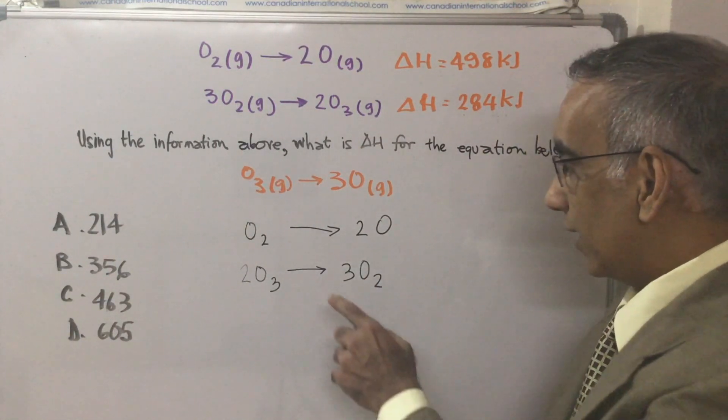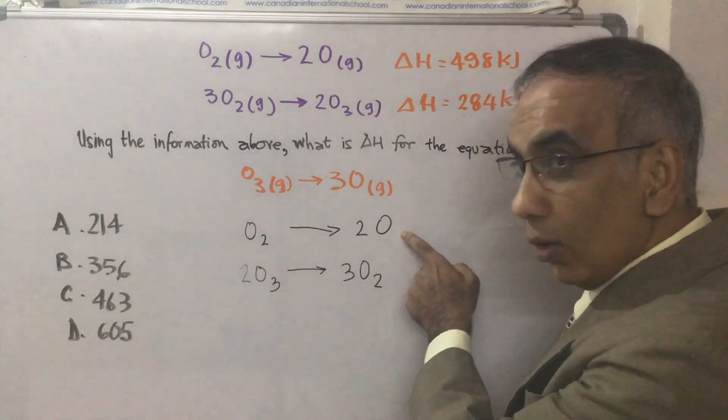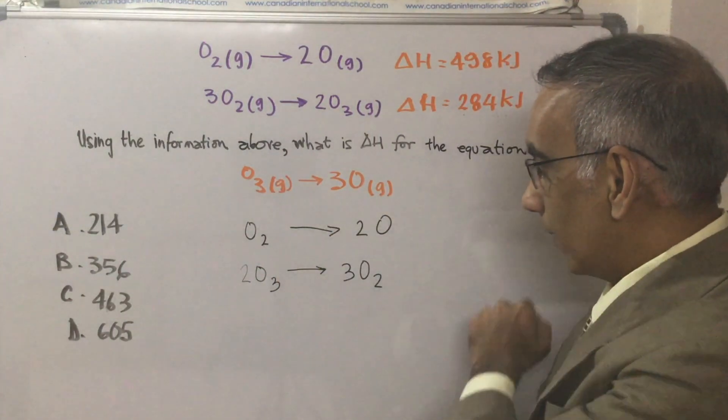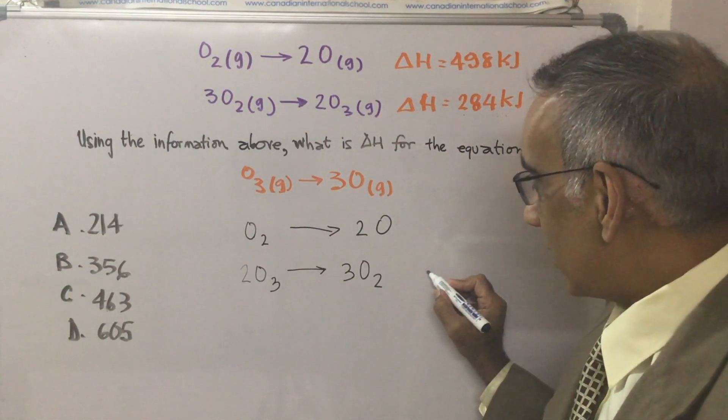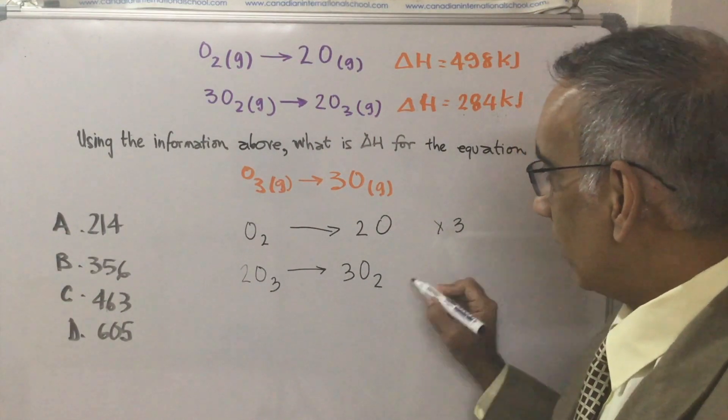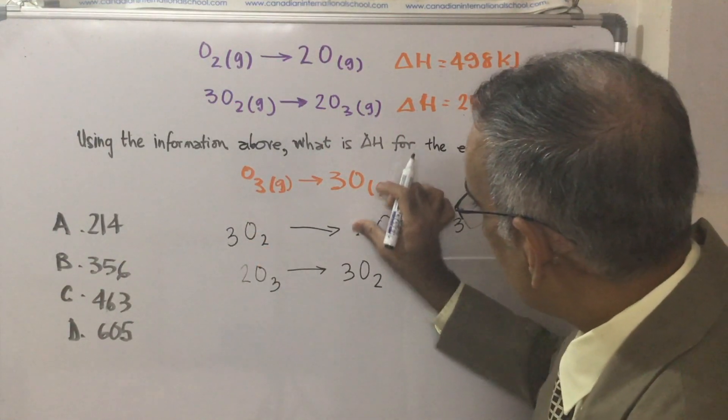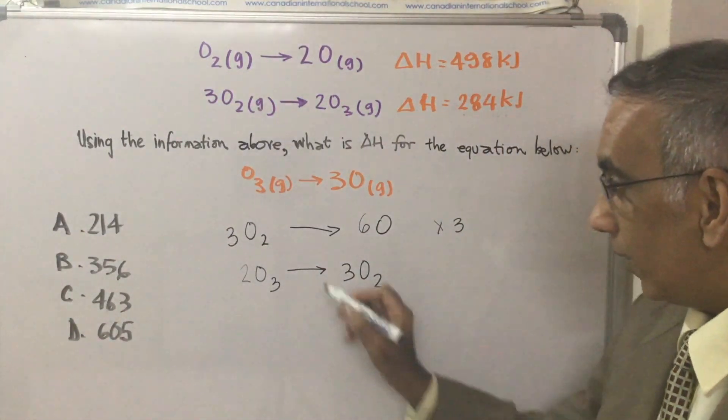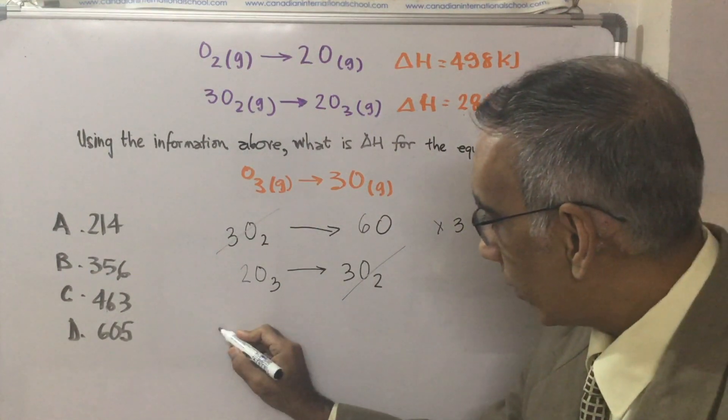Now you want to get rid of the oxygens so that you can leave O₃ and O because this is the reactant here, O₃, and this is the product, O. So how about we multiply this by three? Multiplying this by three would give us a new equation, three O₂ and six O. And then we could cancel these oxygens and we would end up with a new equation.